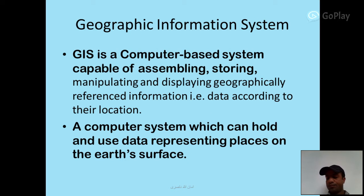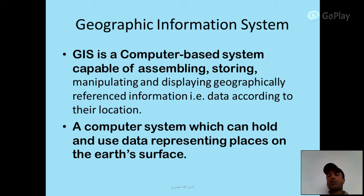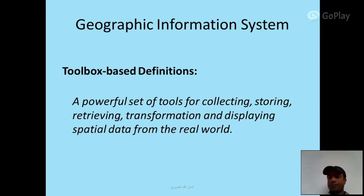Geographic Information System: a GIS is a computer-based system capable of assembling, storing, manipulating, and displaying geographically referenced information — data according to their location. It is a computer system which can hold and use data representing places on the earth's surface. It is also defined as a powerful set of tools for collecting, storing, retrieving, transformation, and displaying spatial data from the real world.